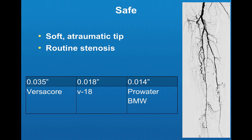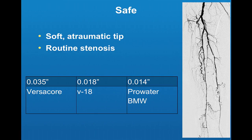A safe wire has a soft, atraumatic tip and is used for routine stenosis. A 0.035 example is the VersaCore, an 0.018 example is the V18, and an 0.014 example is the ProWater or BMW.